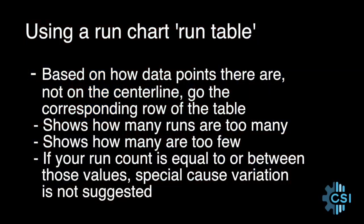We can then use a table that lists the number of data points in your run chart or run chart segment that do not fall on the center line, and then see how many runs are considered too few and how many runs are considered too many to suggest that non-random or special cause variation is going on. So let's look at a quick example.